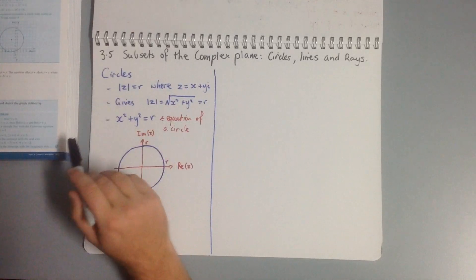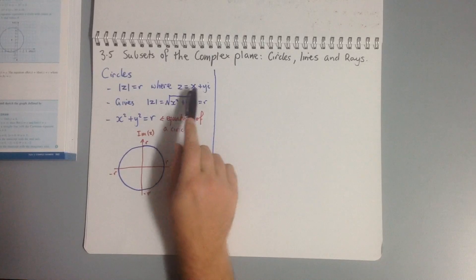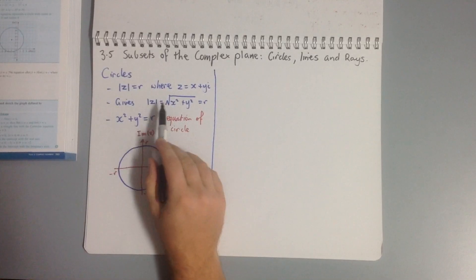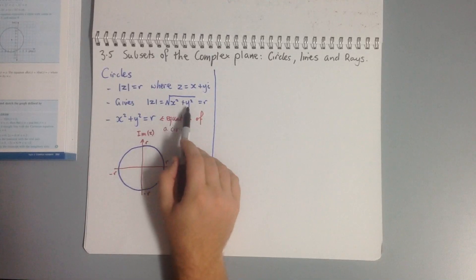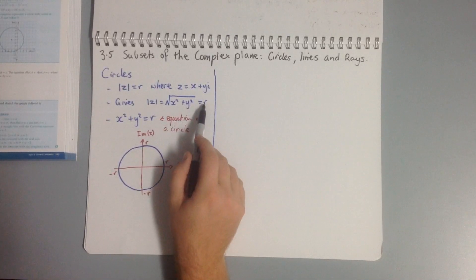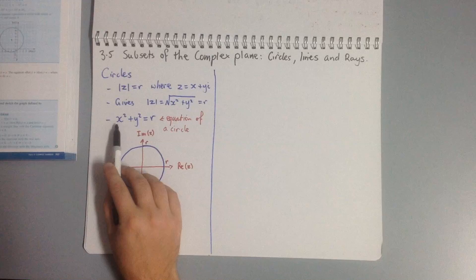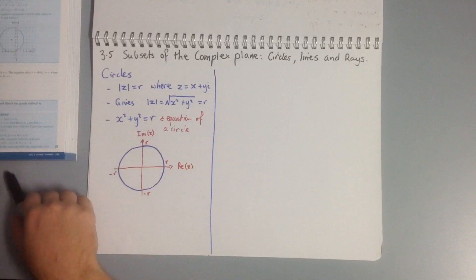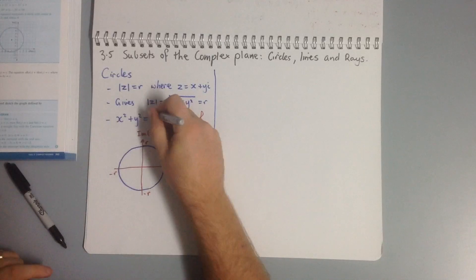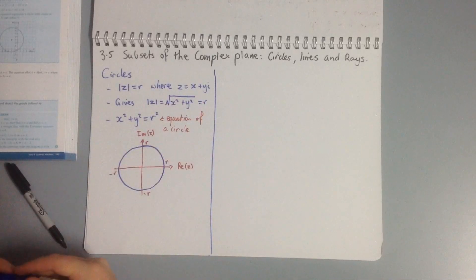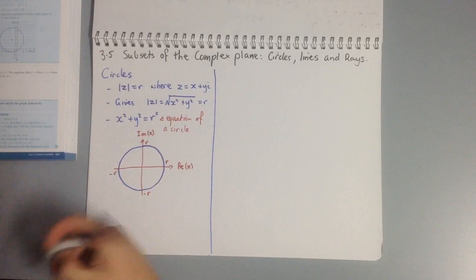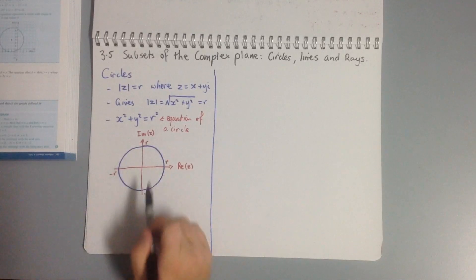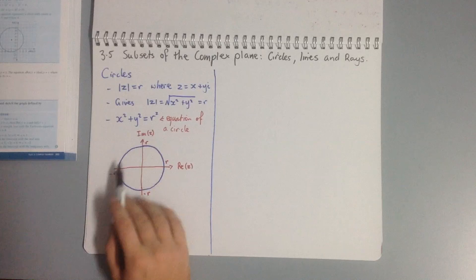...that gives us the modulus of z equals the square root of x squared plus y squared equals r, so we get x squared plus y squared equals r squared. This is the equation of our circle that we use, x squared plus y squared equals r squared.